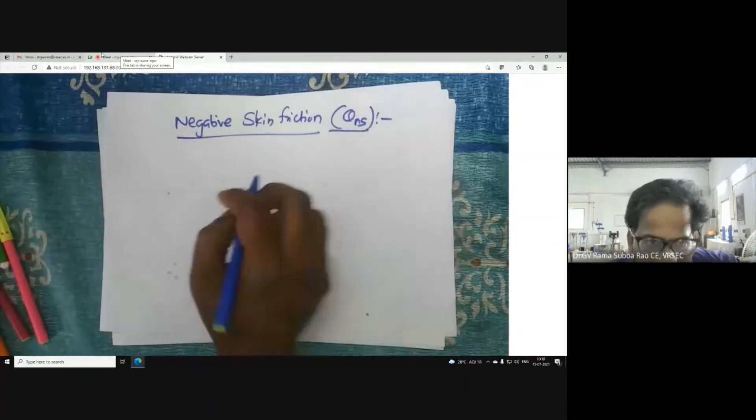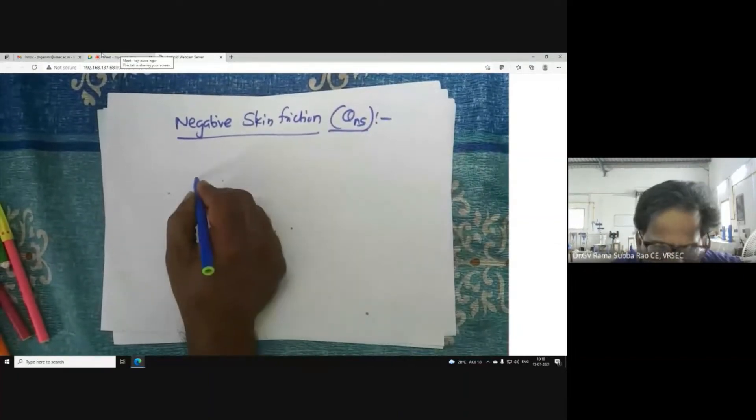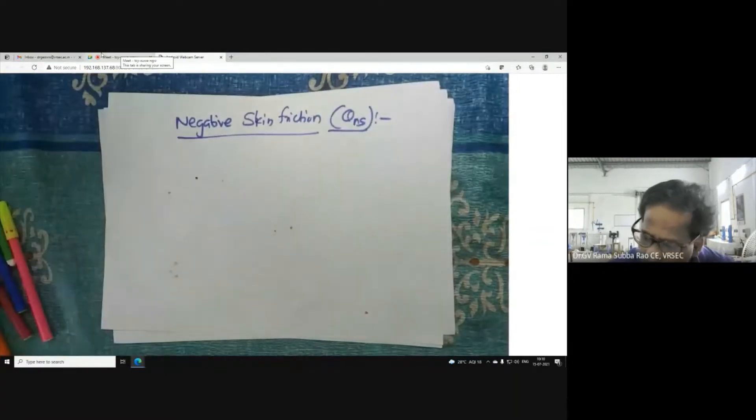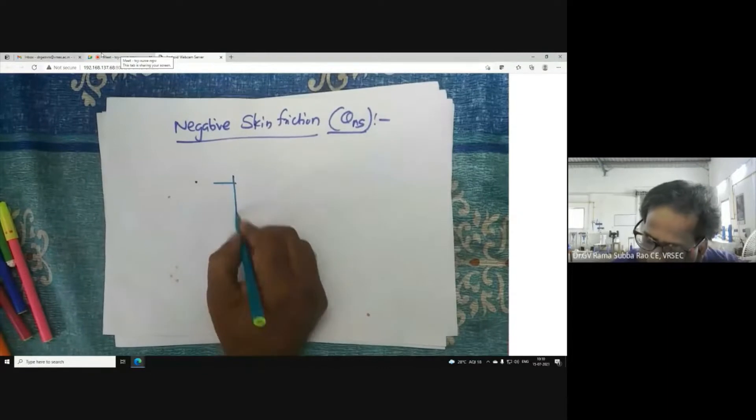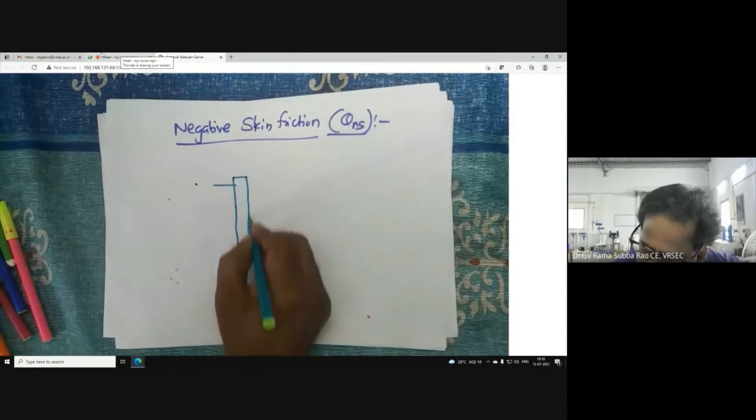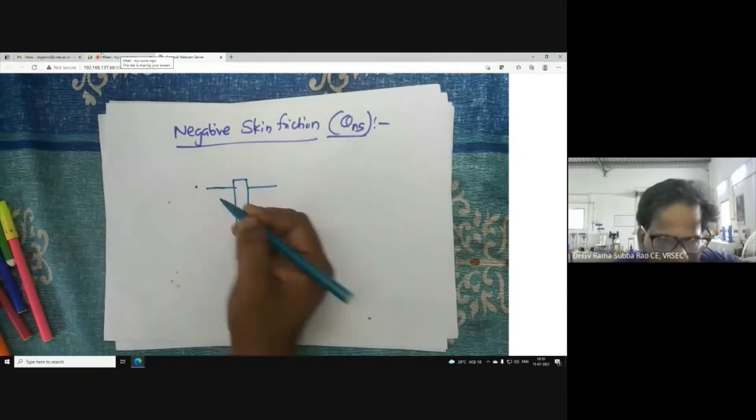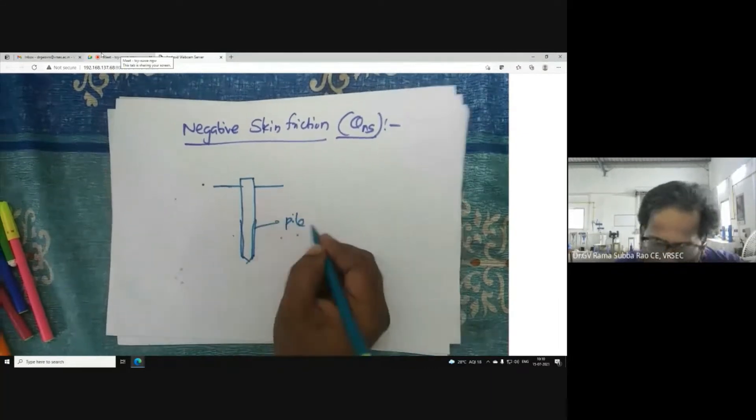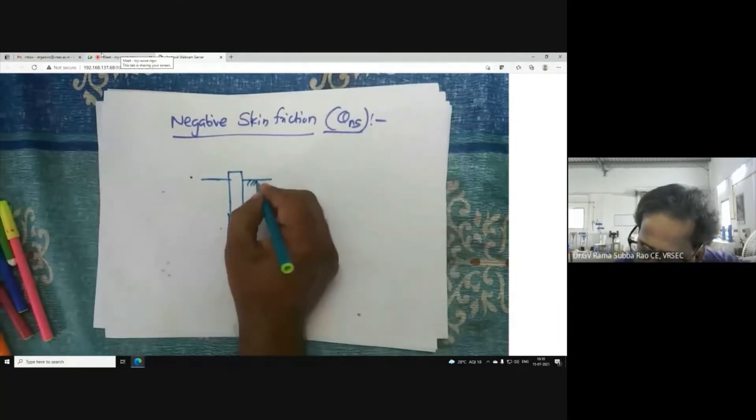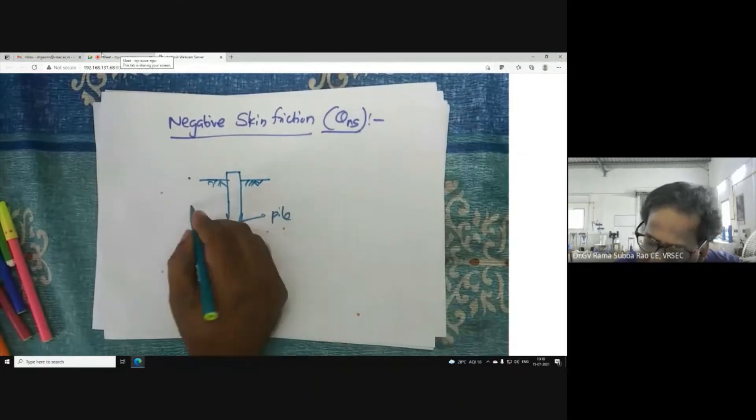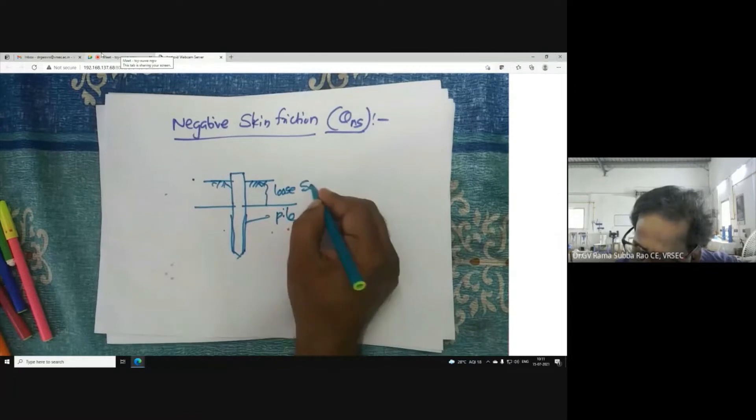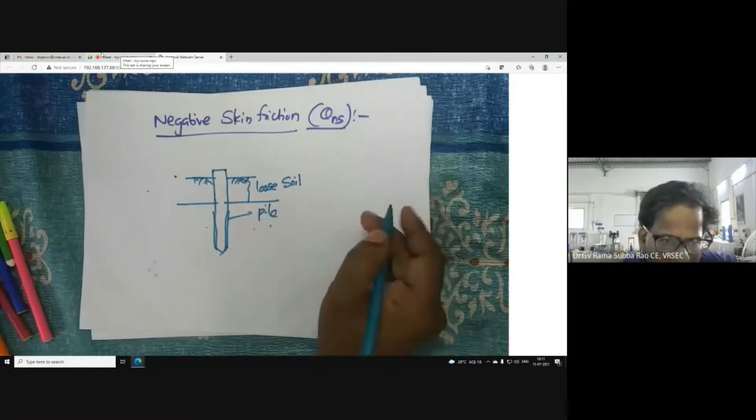Negative skin friction - let me choose another color. This is the pile foundation. Now here, the pile is embedded in loose soil, sometimes loosely compacted soil.